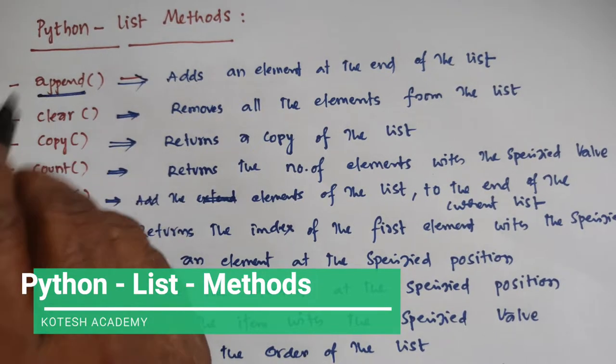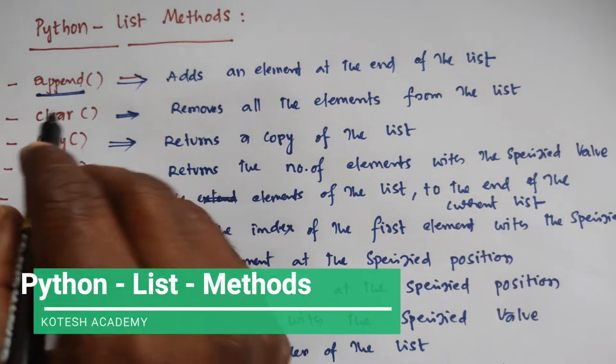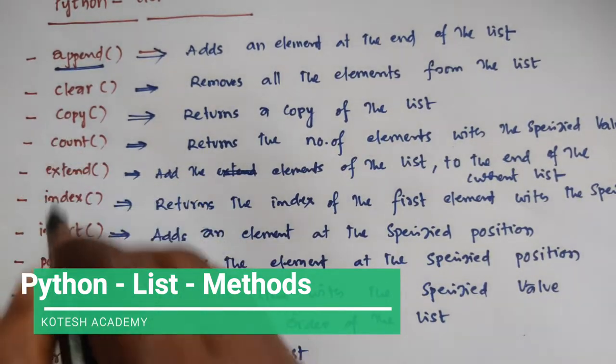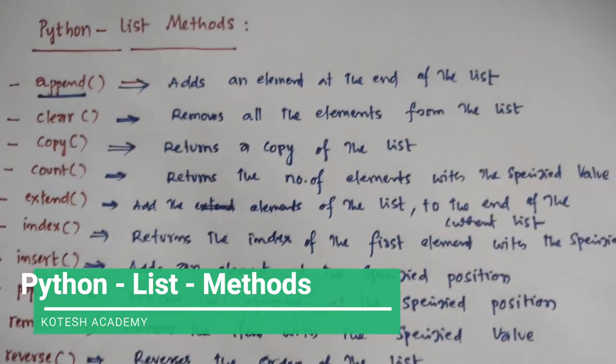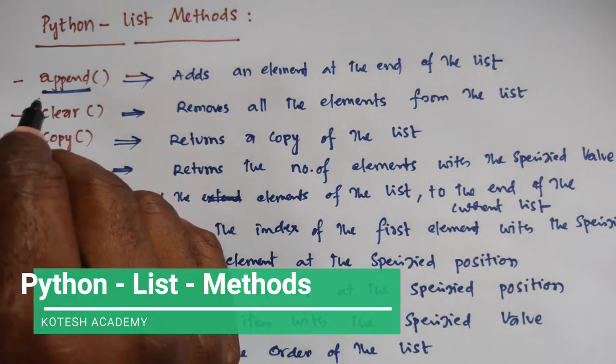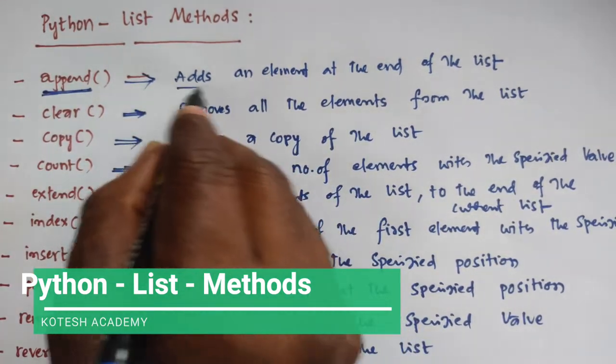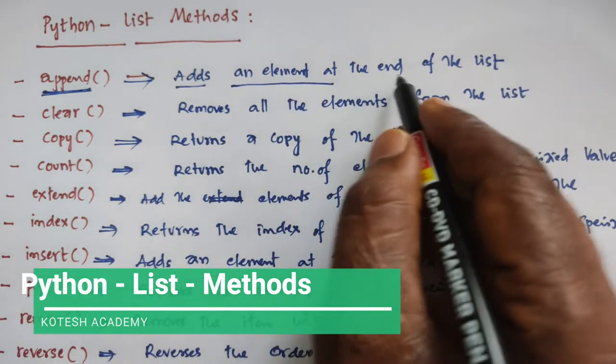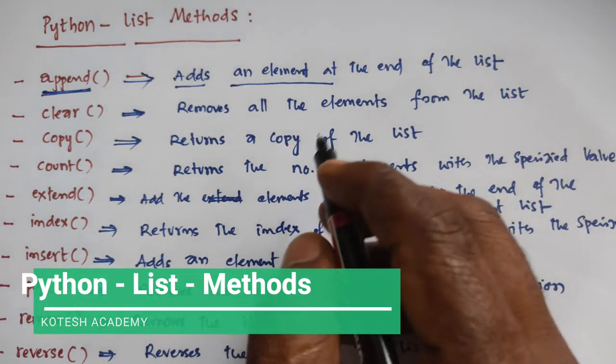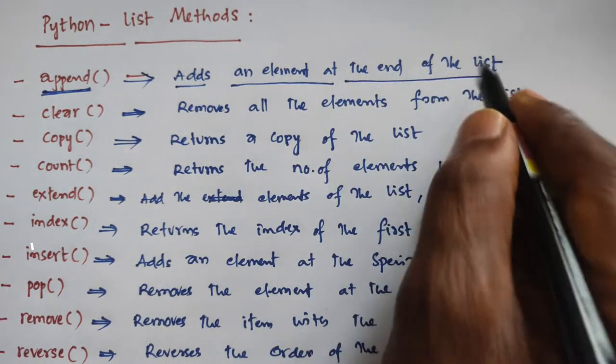First one is append. These were all discussed in previous videos, but I am going to give only a brief idea about each. Append adds an element at the end of the list.